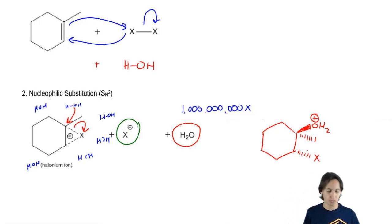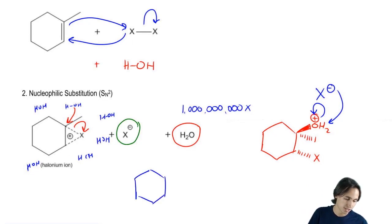I still have one more step unfortunately because I added water so I need to deprotonate. I need to get rid of that H. What can I use to get rid of one of those H's? I could use the X negative. So I'm going to use the X negative in this last step to pull off an H and give the electrons to the O. So now what I'm going to get is a product that looks like this.